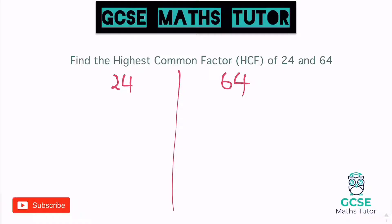The first two factors I always find are one and itself. So one and 24. Then I go one number higher — so two — giving me two and 12. It's a really nice method because it starts to limit the amount of factors for each number. When I've got one and 24, I'm only concerned with numbers between one and 24. But now I've got two and 12, I'm only going to look at numbers between two and 12.